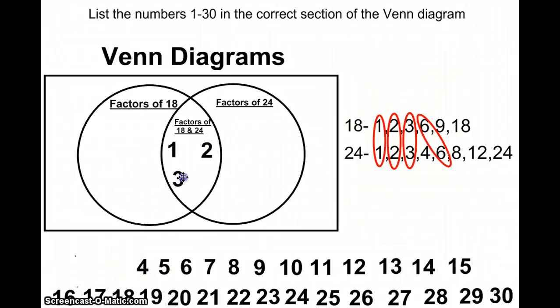Now 4 is the first number that is not in both lists, but it is a factor of 24. So 4 would appear in the section of the Venn diagram that represents factors of 24.